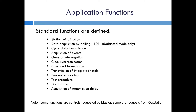General interrogation is the equivalent of the class zero poll in DNP3. The master can request a clock synchronization and can send commands to the outstation. There's a way for sending integrated totals or counter measurements, parameter loading which allows the master to send certain parameters to the outstation, testing requests, file transfer requests, and requests to acquire the transmission delay. Some of these are control requests from the master, some are from the outstation — I'm just going to go over a few of the more important ones.